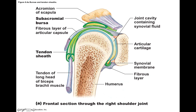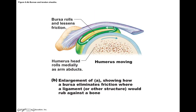We also find tendon sheaths near this joint — for example, the tendon of the long head of biceps brachii. Because this tendon moves a lot, it has a tendon sheath, which is a synovial membrane that surrounds the tendon so it can rub back and forth while being lubricated, reducing friction. The bursa itself rolls with the joints — when the head of your humerus rolls as you move your shoulder, the bursa rolls around and lubricates between those tissues to prevent friction.